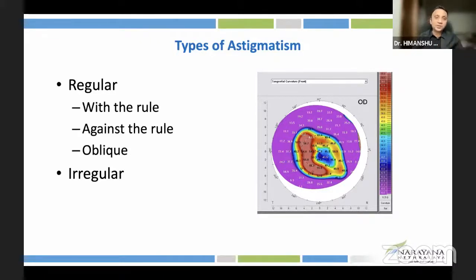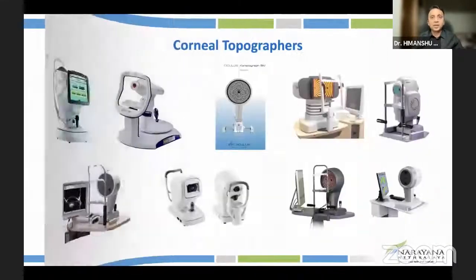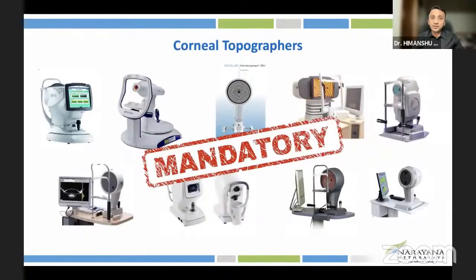Taking the previous discussion about trifocal lenses in a keratoconic eye: a keratoconic eye would be highly irregular. Higher-order aberrations would not be taken care of. All these lenses do is take care of lower-order aberrations — sphere and cylinder — which may not give the best outcome. Corneal topographers are mandatory if you are planning any specialized or premium lenses.